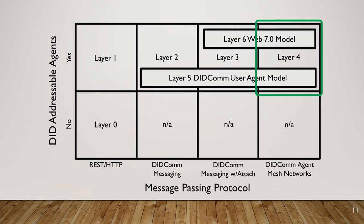Layer four takes things in a significantly different direction. This is where we envision a mesh network that connects a large number of DIDCOM agents together, with secure, private, intelligent routing of DIDCOM messages through the network, and support for disconnected clients — clients that are either offline or agents that are behind a firewall.